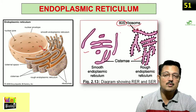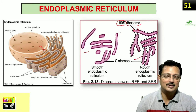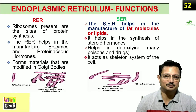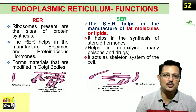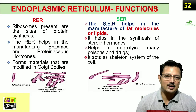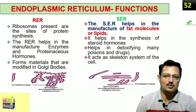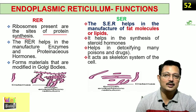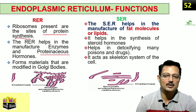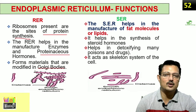Let us see what function these organelles perform. Rough endoplasmic reticulum is the site of protein synthesis. They are the site for synthesis of important enzymes and proteinaceous hormones. They form material that is then modified in the Golgi body. So RER is basically the site for protein synthesis.